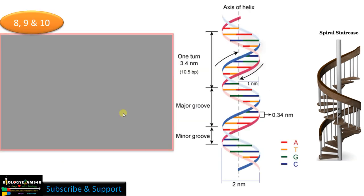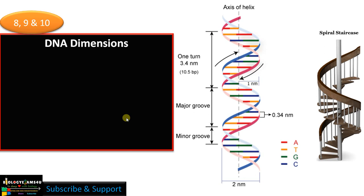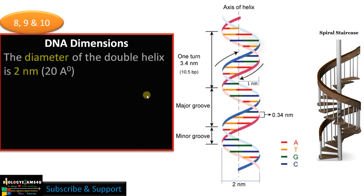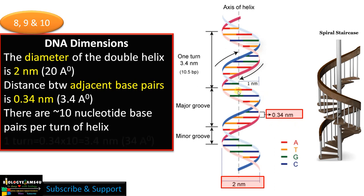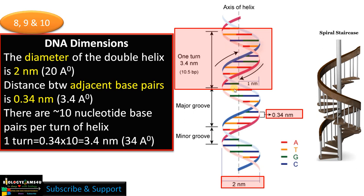Points 9 and 10 concern the dimensions of B-DNA, the most common form of DNA. The diameter of the double helix is 2 nanometers (20 Å). The distance between adjacent base pairs is 0.34 nanometers (3.4 Å). Each turn is made up of 10 nucleotide base pairs, giving 0.34 × 10 = 3.4 nanometers per turn.